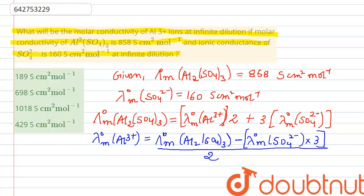Now let's substitute the values to find out lambda m0 for aluminum 3 positive equals 858 minus 160 times 3, divided by 2, which will come out to be 189 Siemens centimeter square mole inverse. Therefore, the value of ionic conductance of aluminum ion at infinite dilution comes out to be 189 Siemens centimeter square mole inverse. Thank you so much.